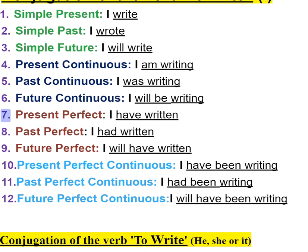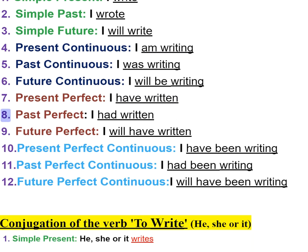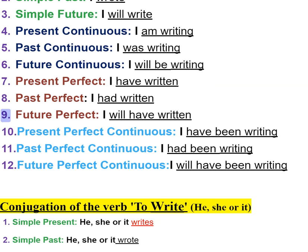Seven: present perfect — I have written. Eight: past perfect — I had written. Nine: future perfect — I will have written.